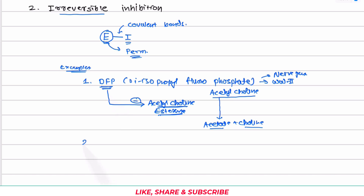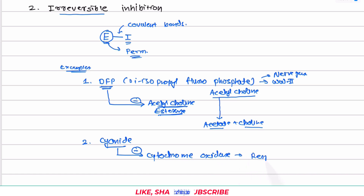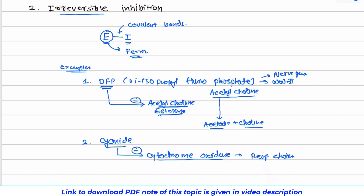The second example is cyanide. Cyanide irreversibly inhibits the enzyme cytochrome oxidase, which is an enzyme of the respiratory chain. If this enzyme is inhibited, the respiratory chain cannot function properly, ATP cannot be generated, and the person's death occurs. Because it disrupts the respiratory chain, cyanide is also called a respiratory poison.